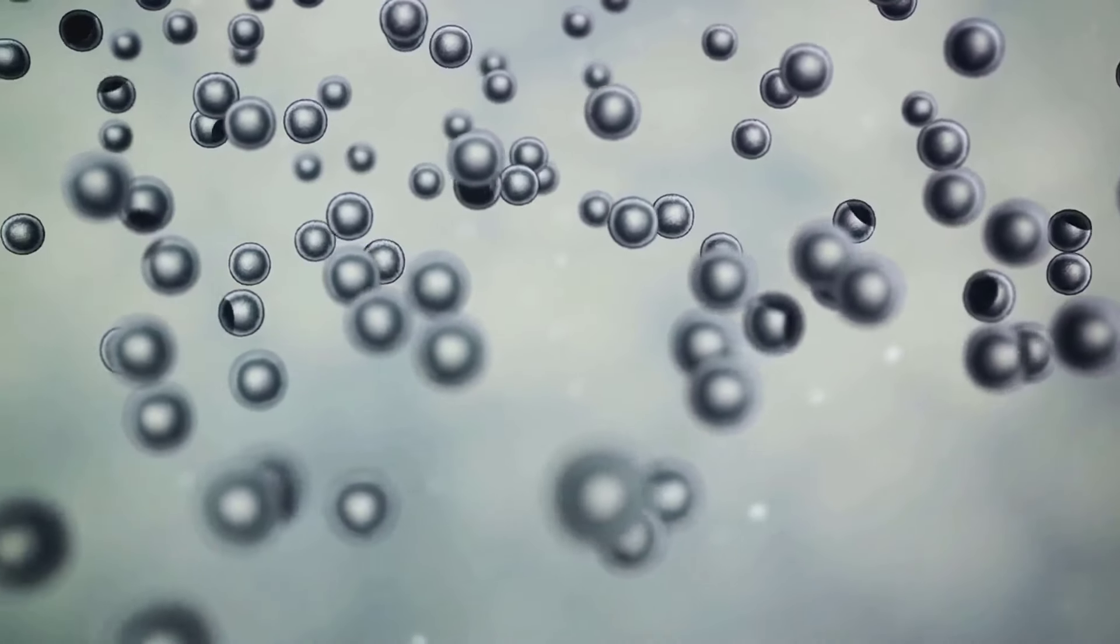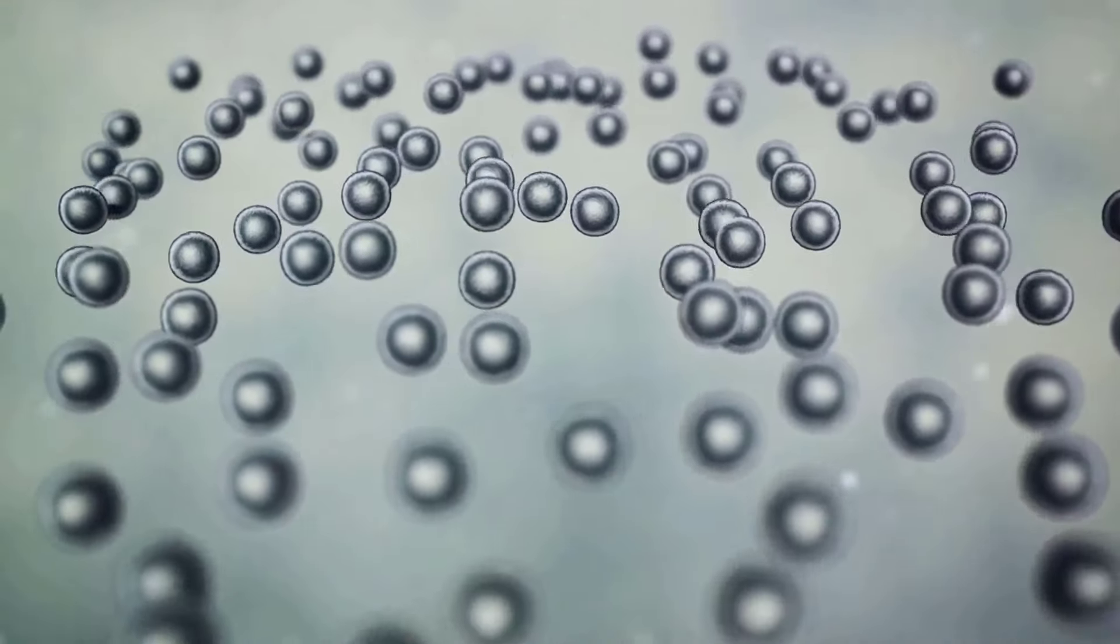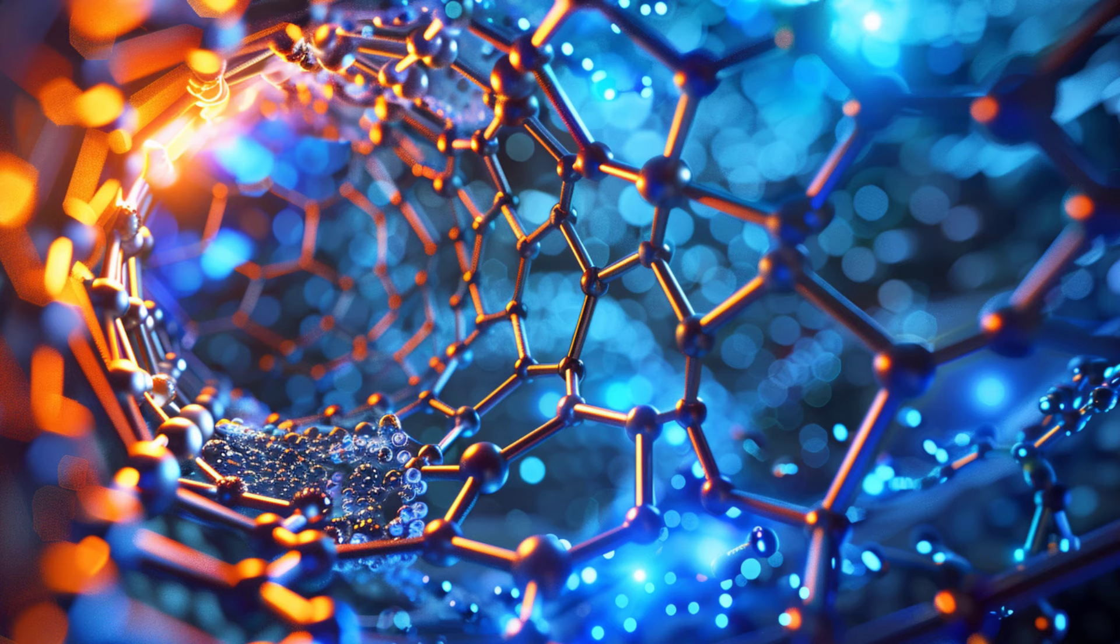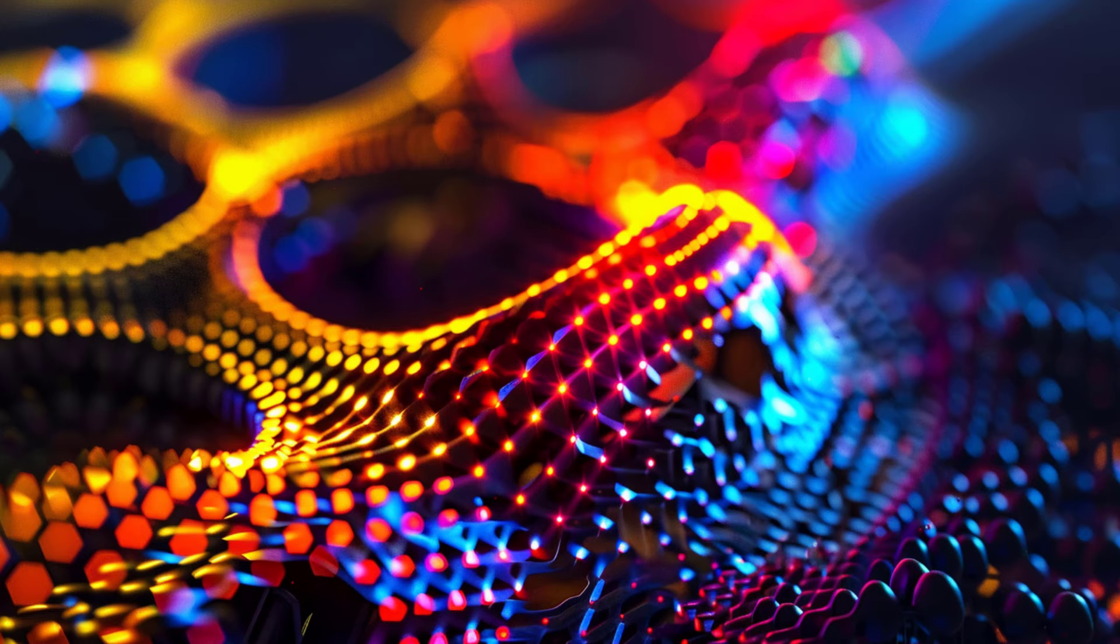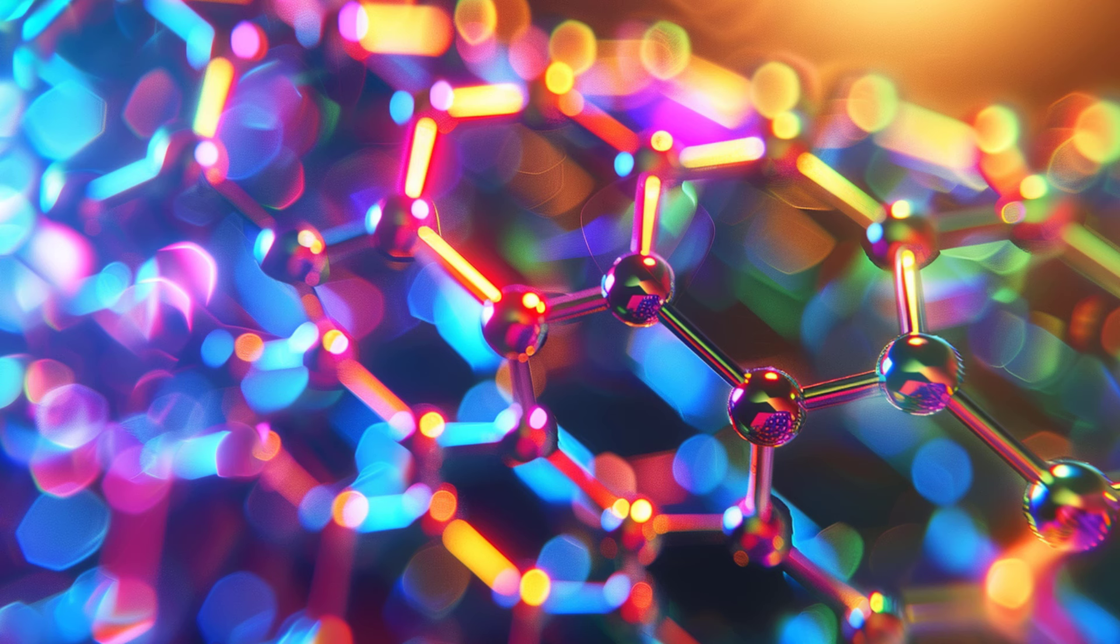The method of synthesizing fullerenes is quite intriguing. One of the most common methods is the arc discharge technique, where high current is passed between two graphite rods in an inert gas atmosphere, leading to the formation of soot, which contains these marvelous structures.